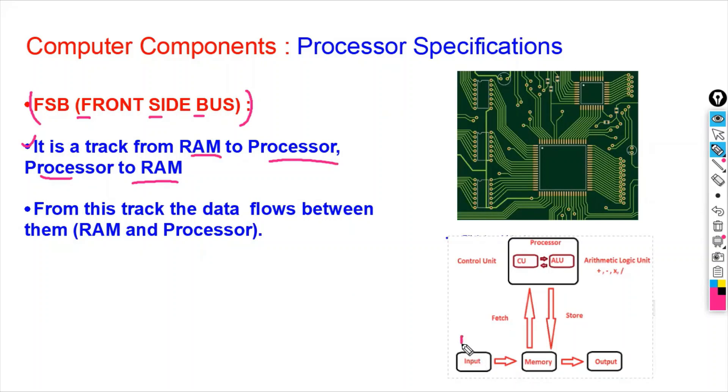So in this example, if you see we are giving the input here, the input will go to the memory. From the memory, CPU will fetch the information. So they have one track between CPU and memory, and the track is called as FSB.